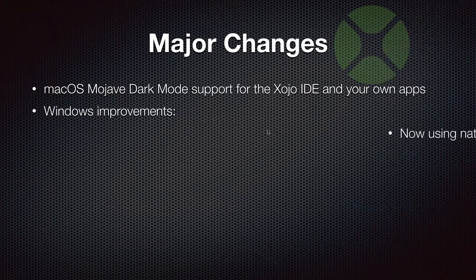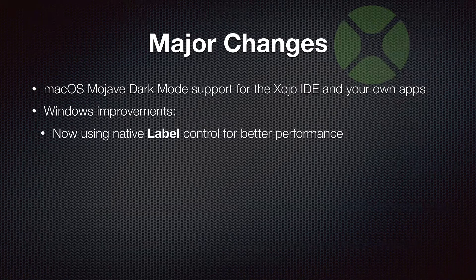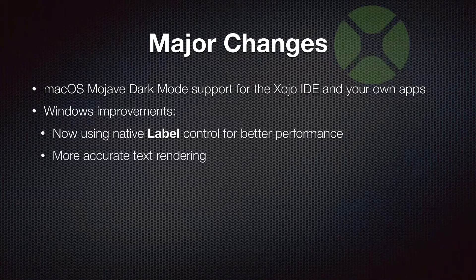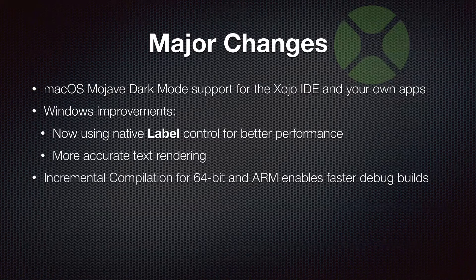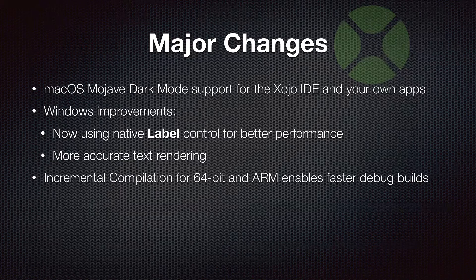We continued to improve Windows as well. The native label control is now used for better performance, and text rendering has been improved to match the built-in controls. The last piece of the 64-bit transition was also added: incremental compilation. When you hit run in the Zojo IDE with your app set to 64-bit, it now builds much faster the second, third, and fourth time, because it only recompiles things you have changed rather than the entire project. That greatly improves your testing cycle.